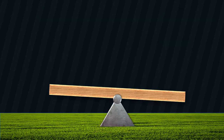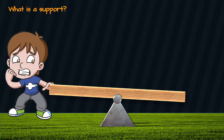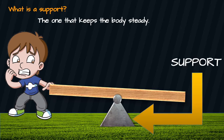Now that you have already known equilibrium, let us define support reaction. But first, what is a support? Let us go back to the seesaw. Our seesaw consists of a plank that carries the loaded person or persons sitting on it and the mechanism attached at the center. If someone pulled the plank along its length, the plank will not move and remain at rest. Therefore, we can say that the mechanism attached to the plank is the support.